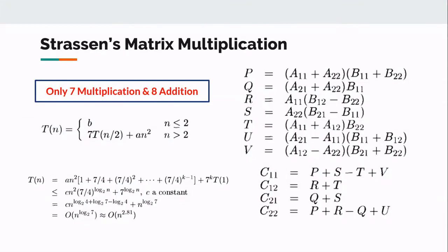In Strassen's matrix multiplication, there will be only 7 multiplications and 8 additions. In the divide-and-conquer multiplication that we have seen in the previous section, we have 8 multiplications and 4 additions. So Strassen reduced it to 7 multiplications and 8 additions.